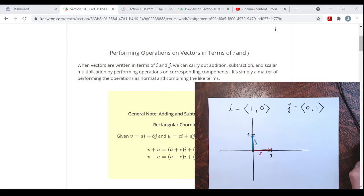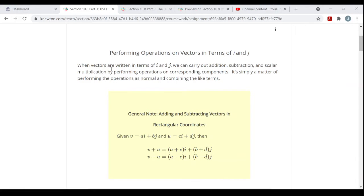You'll see other videos where I go over doing that, and it's pretty simple. When vectors are written in terms of i and j, we can carry out addition, subtraction, and scalar multiplication by performing operations on corresponding components.